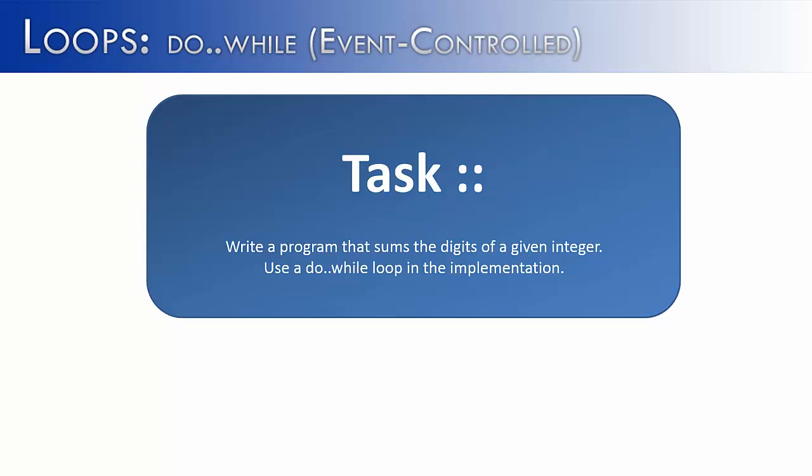Count-controlled loops are really the domain of for loops. Where while and do-while loops really shine is when they are event-controlled, meaning there isn't a fixed number of times that's going to run. It depends on the situation, and the situation is going to be ended by a certain event.